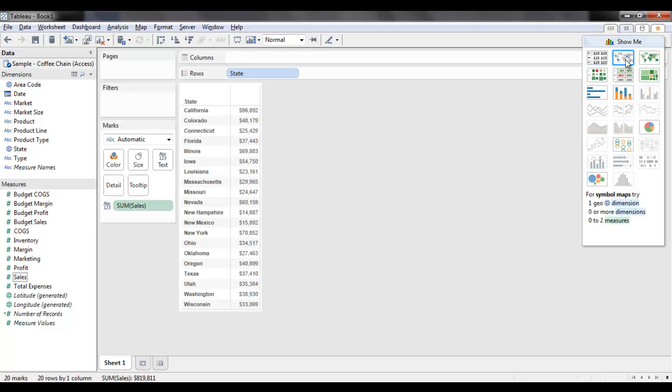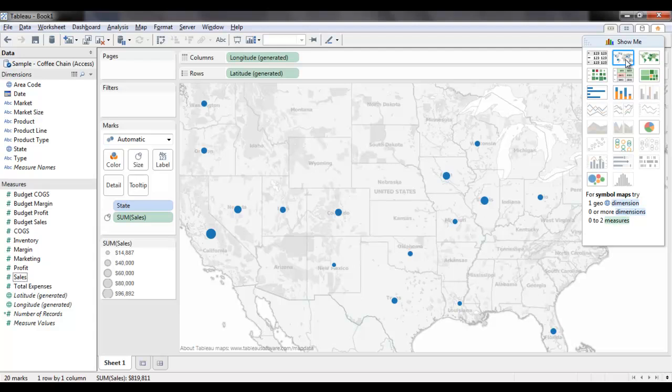You can also select Symbols Map View. This will display the sales as bubbles on the map, and the size of the bubble will correspond to the sales value for each region. For example, the bubble on California looks pretty big compared to other states, so we can infer that California is doing well in sales.